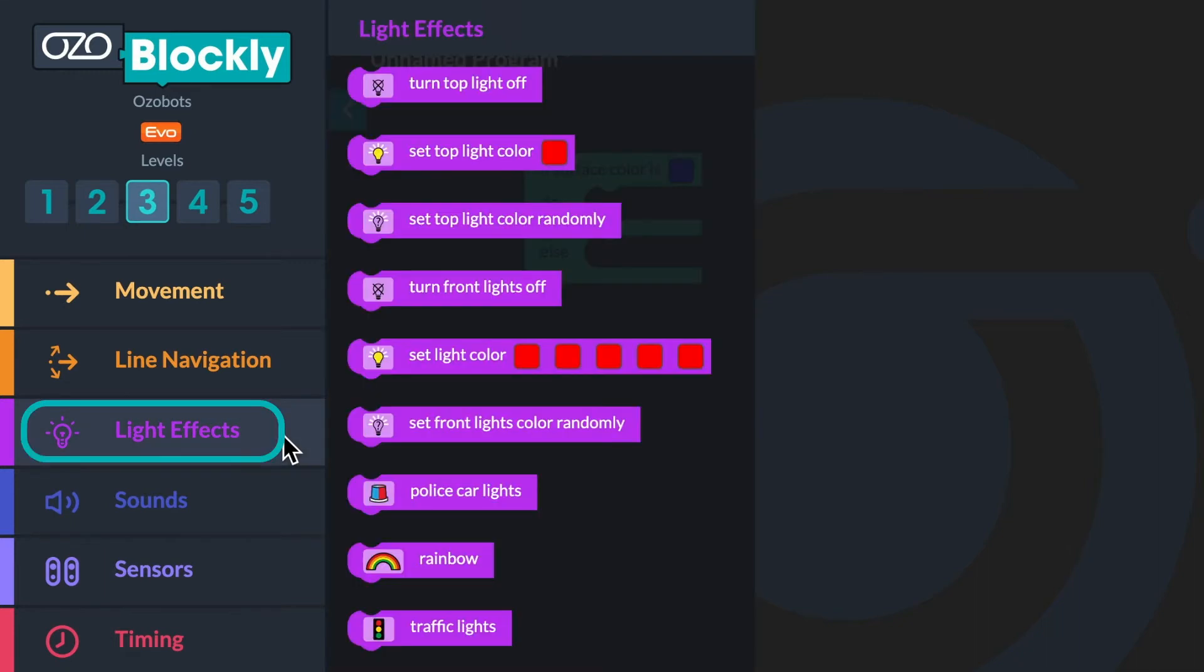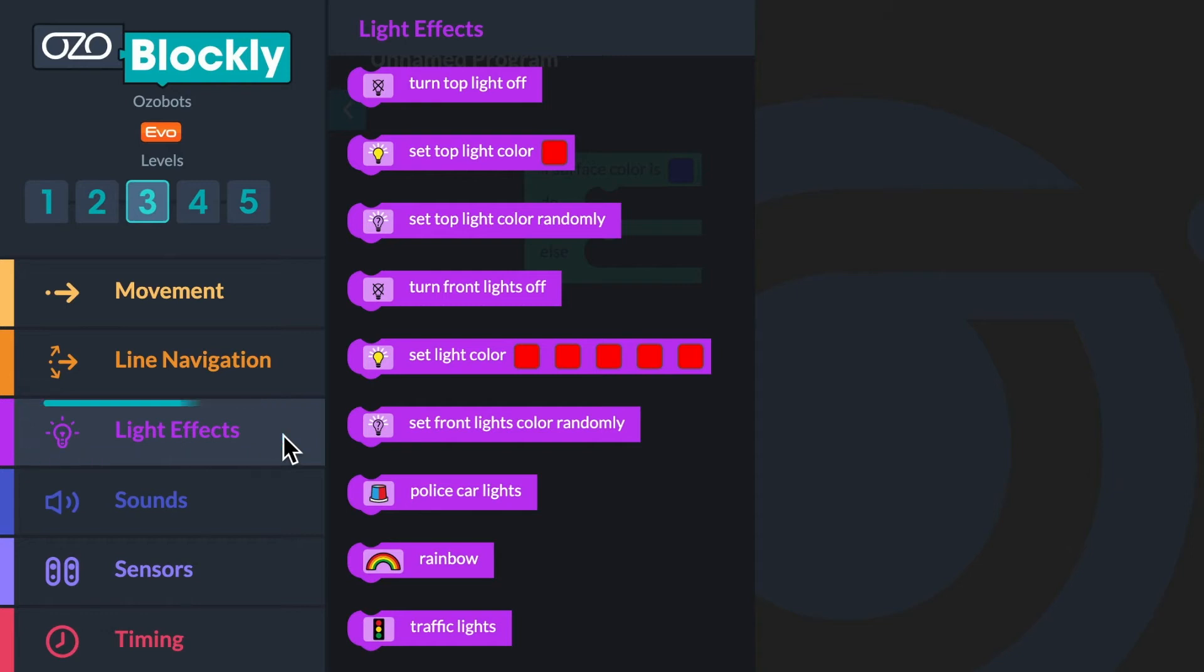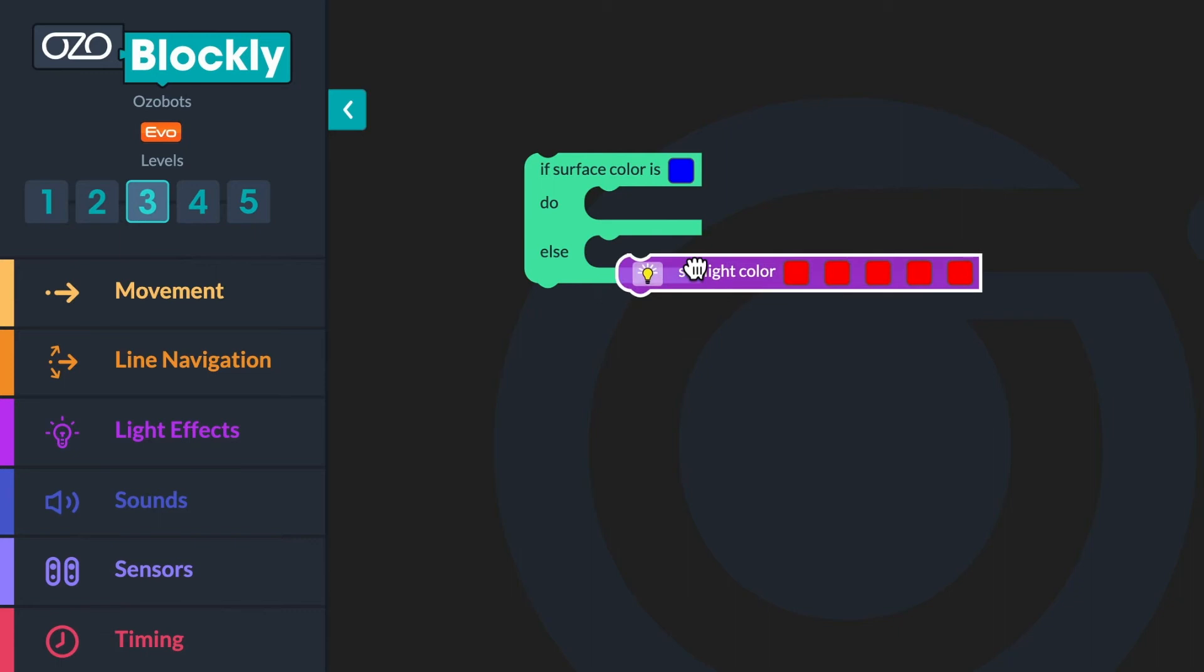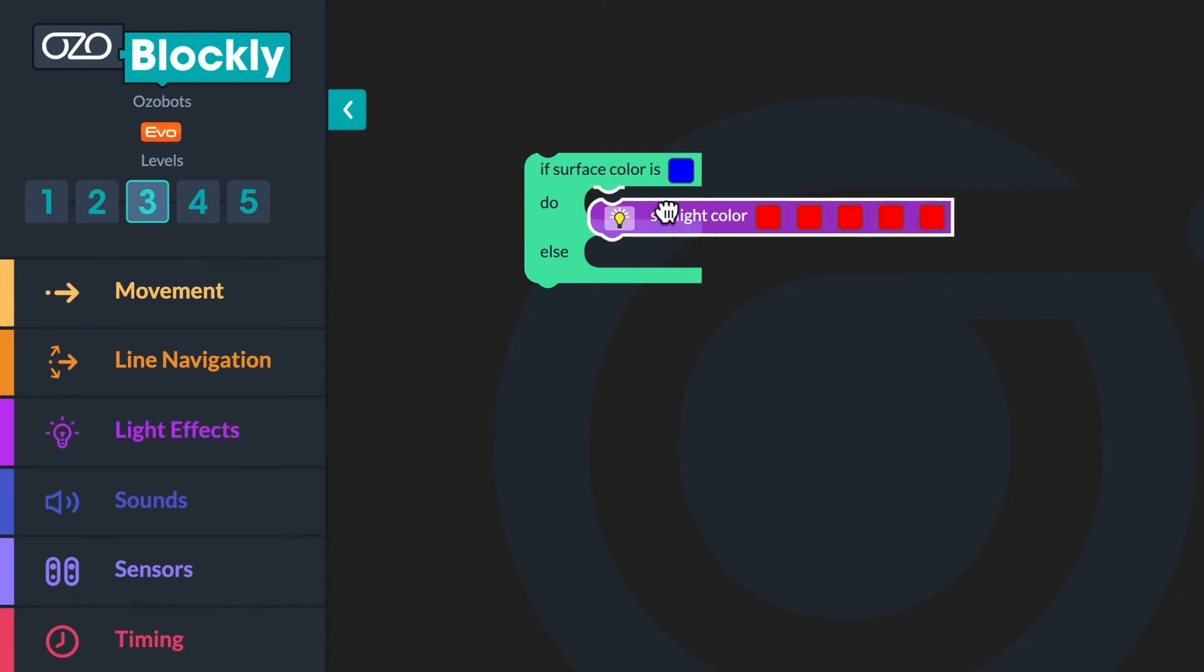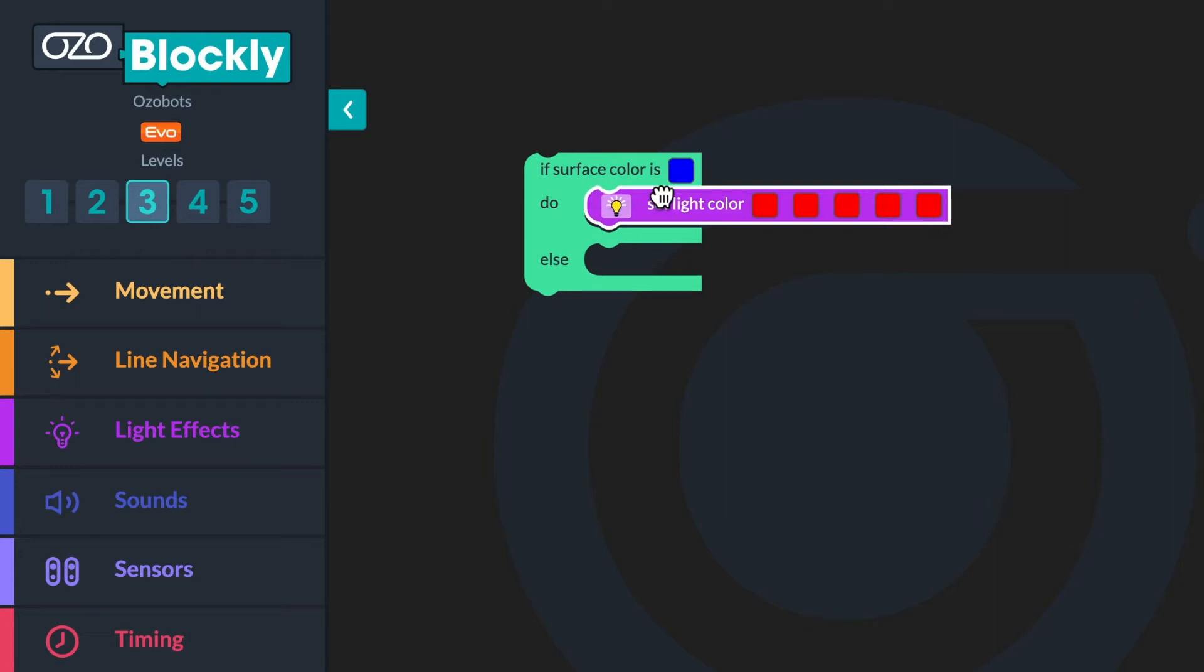Then go to light effects in the block panel. Click and drag the set light color to block onto the workspace into the conditional block after the word do. Click on all five red squares and change them to the color blue.